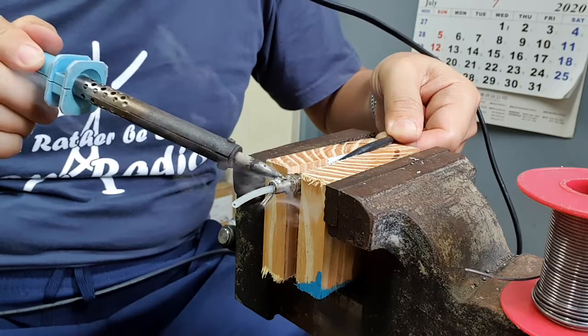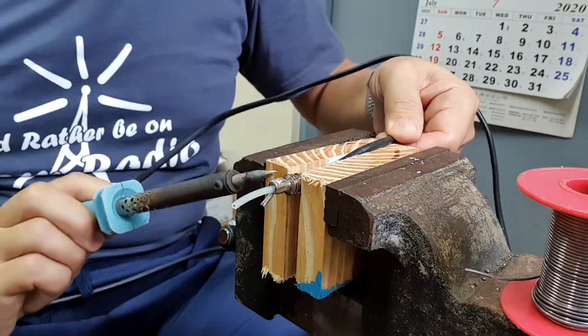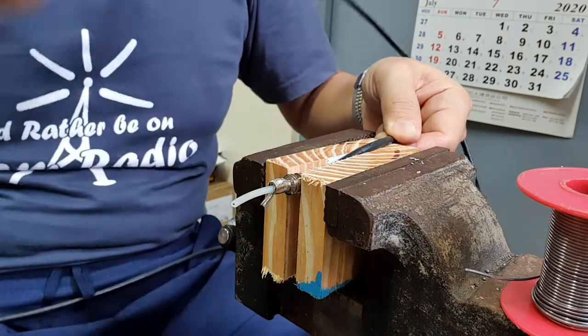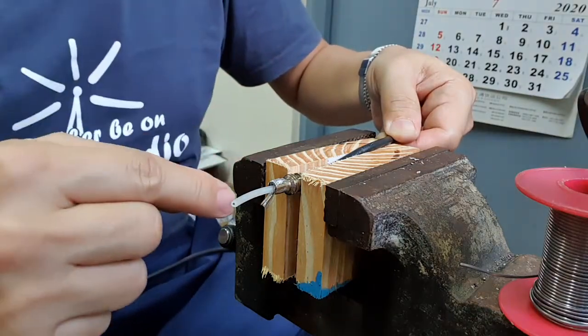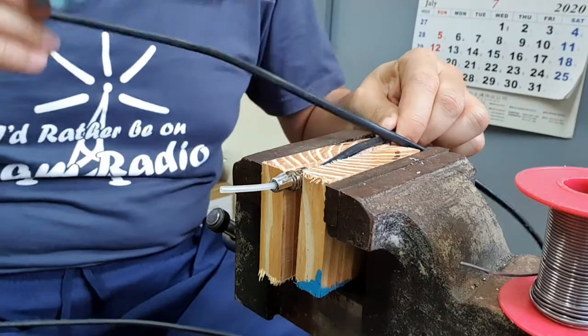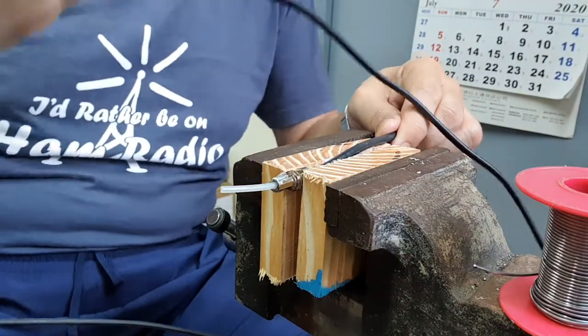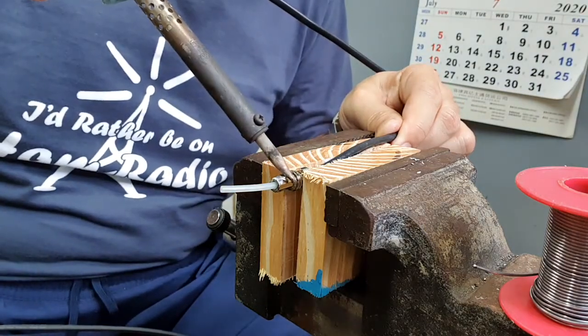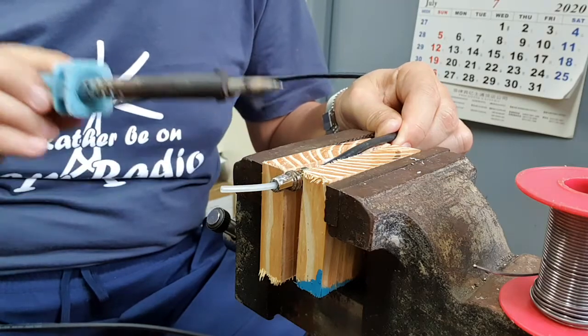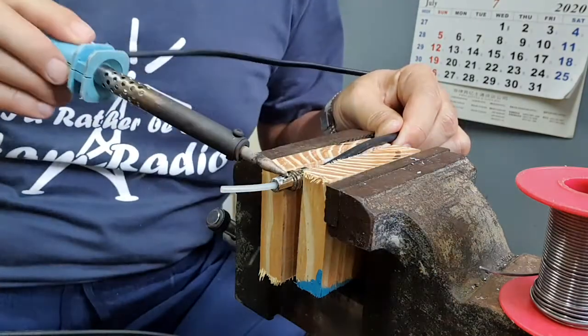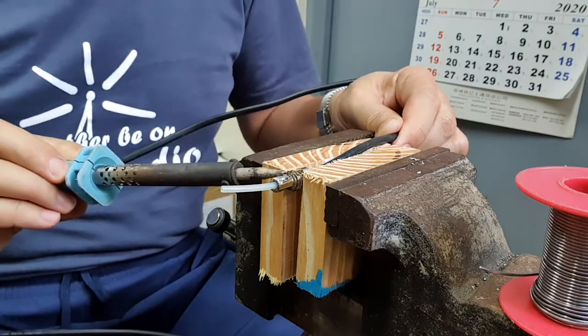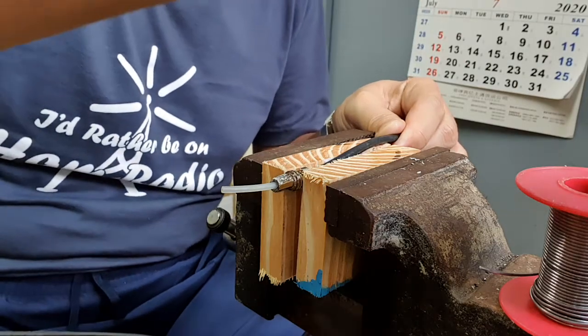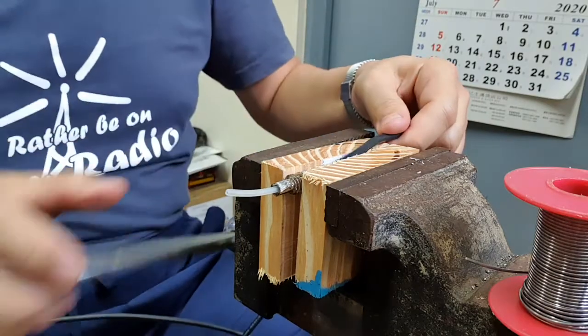So let's do this, solder it. Perfect, clean solder on the braid. Then I will turn this and do the same thing on the other side. Done.